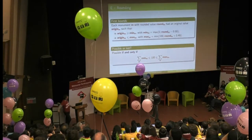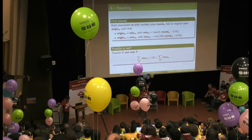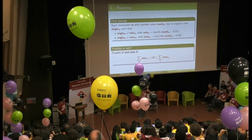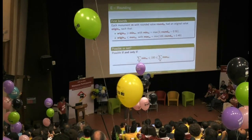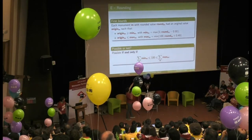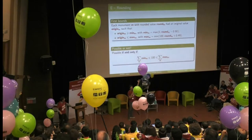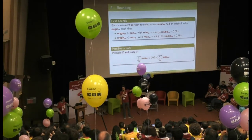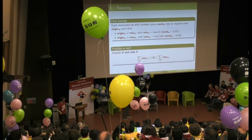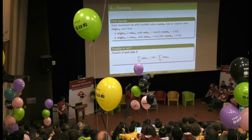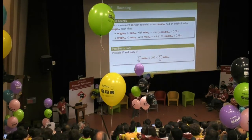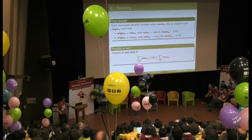The goal of the problem is to find the original bounds of rounded values that are supposed to sum to 100. For each rounded value, the minimal and maximal value are straightforward: they are either rounded minus 0.5 or rounded plus 0.9, except for 0 and 100 which are 0 or 100. It is possible if 100 is between the sum of all minimal values and the sum of all maximal values; otherwise it is impossible.